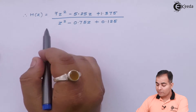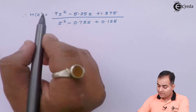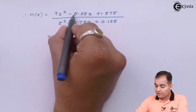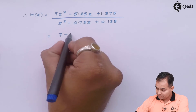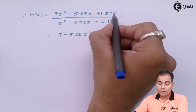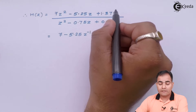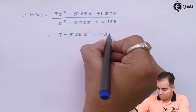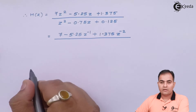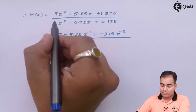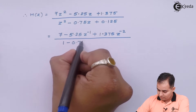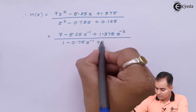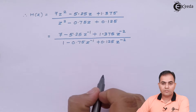If I take Z squared common from the numerator, the first term becomes 7, the next is 5.25 multiplied by Z inverse, and the last is 1.375 divided by Z squared, which can be written as Z to the power minus 2. In the denominator, taking Z squared common gives 1 as the first value, then Z to the power minus 1, and the last term 0.125 multiplied by Z to the power minus 2.